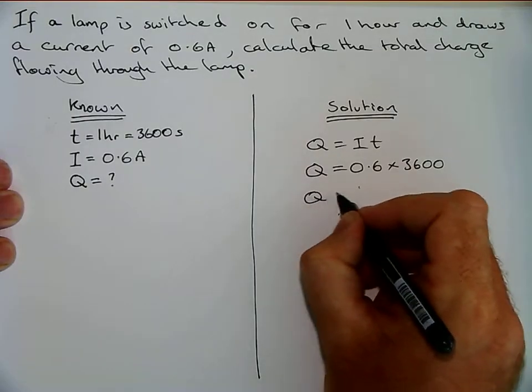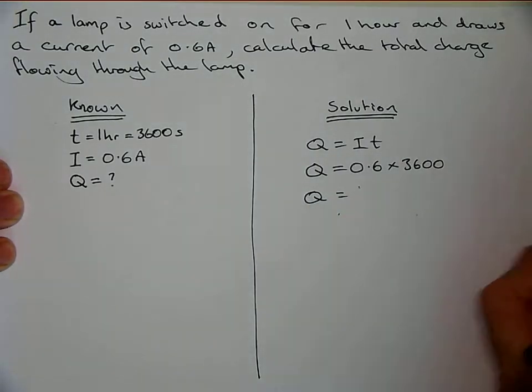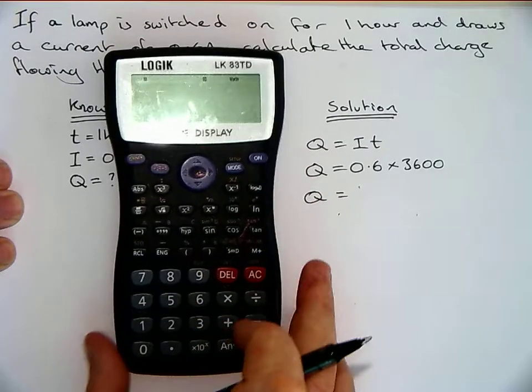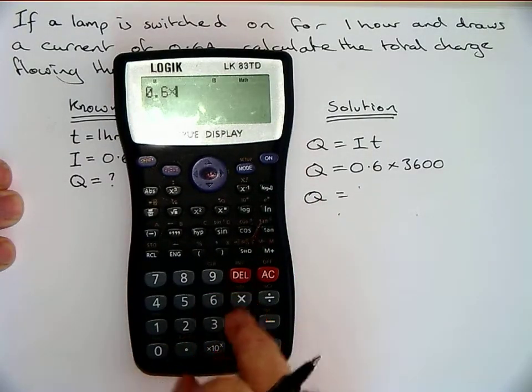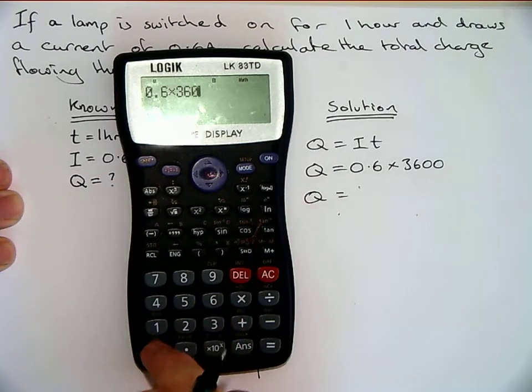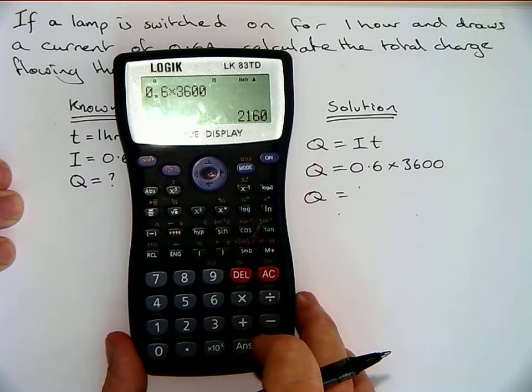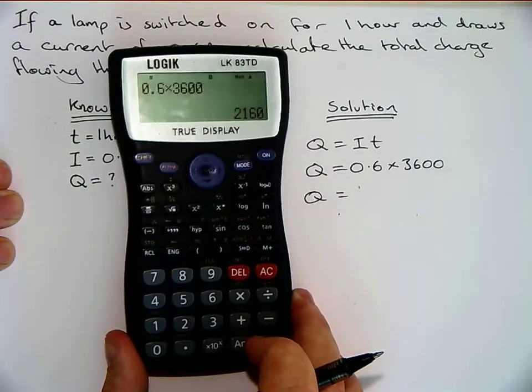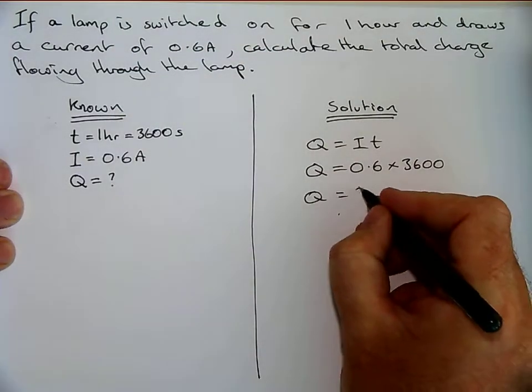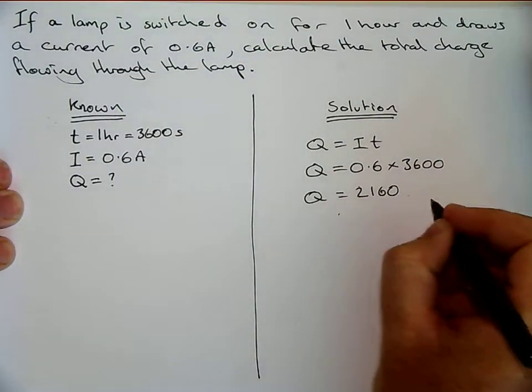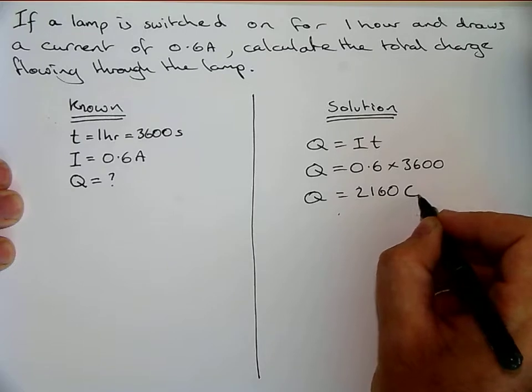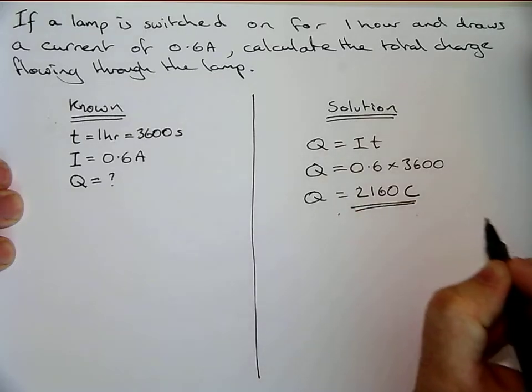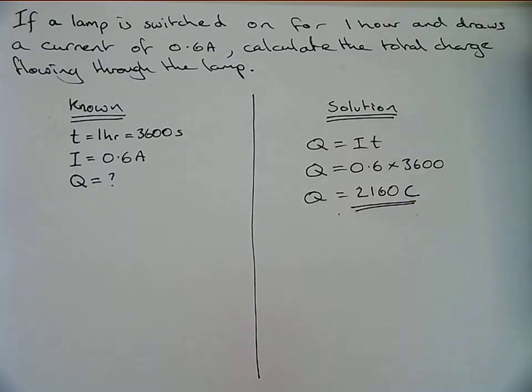And at this point we reach for our calculator and we work it out, so it's 0.6 multiplied by 3600, which gives us 2160. Now we need to put a unit in here. For charge, the unit is the Coulomb, capital C. And that's actually easy peasy.